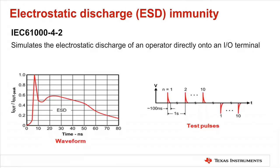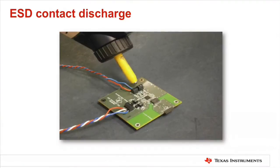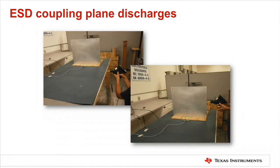This test simulates the electrostatic discharge of an operator directly onto an electronic component. To simulate this event, an ESD generator applies ESD pulses to the equipment under test, or EUT, either through air discharge, as shown in this photo, or through a vertical or horizontal indirect coupling plane, as shown in these two photos.